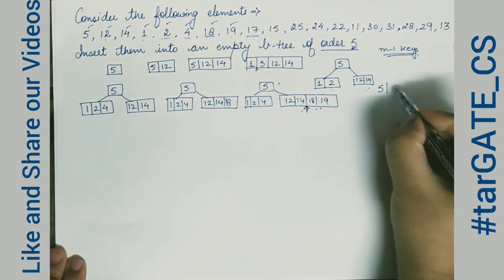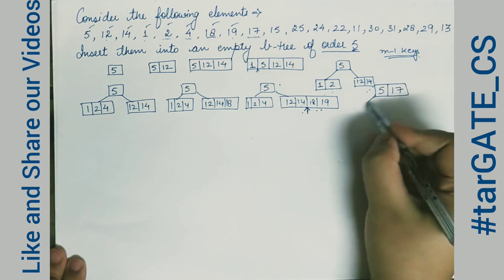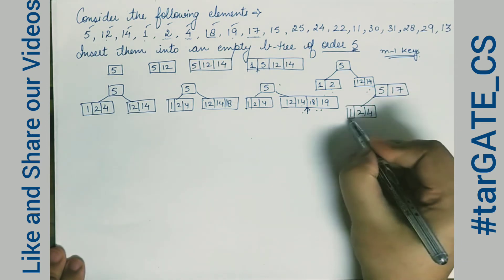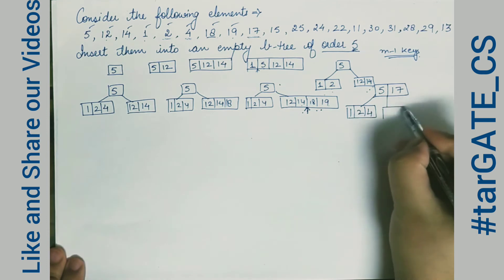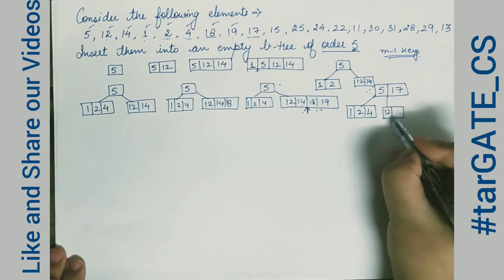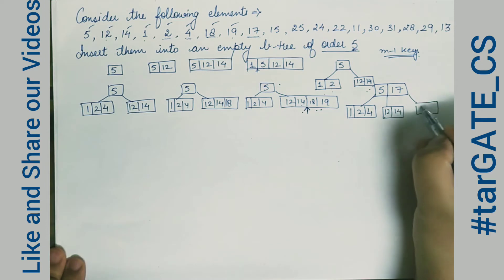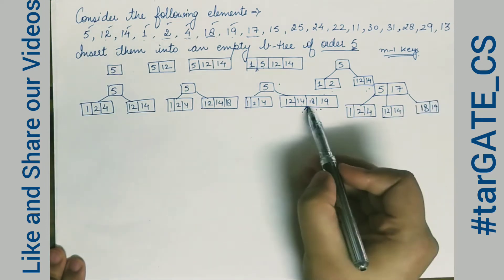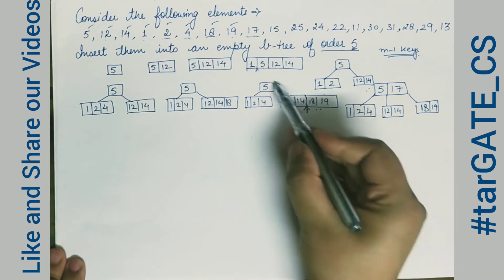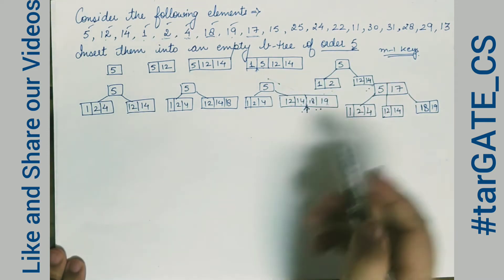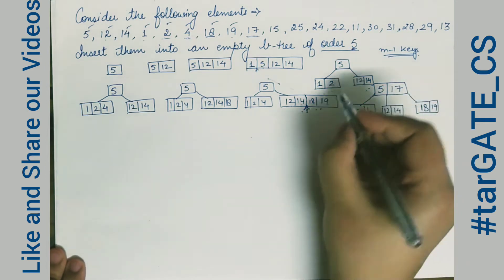After splitting, 17 goes up to join the root node, making it 5 and 17. On the left we keep 1, 2, 4; in the middle we keep 12 and 14; on the right we keep 18 and 19. This is the final result of that step.